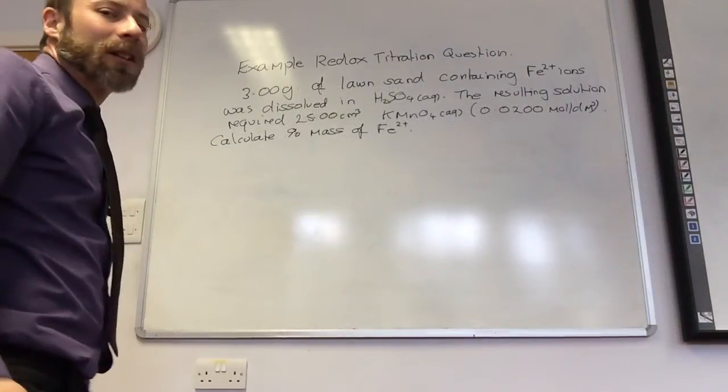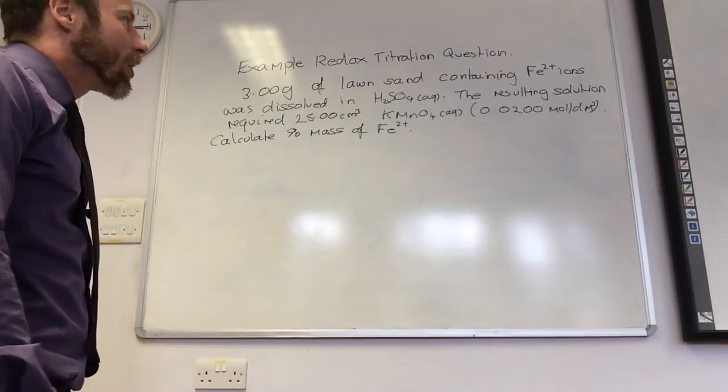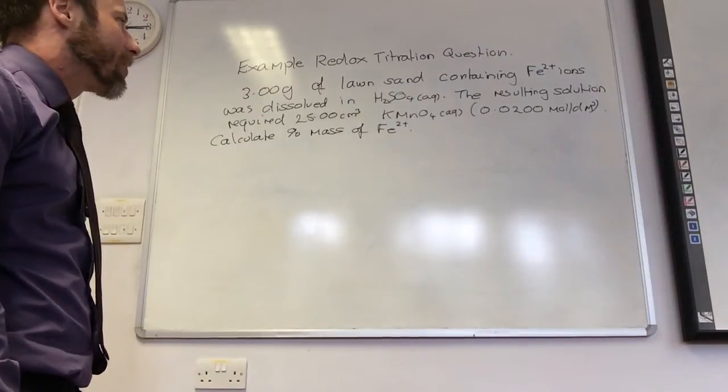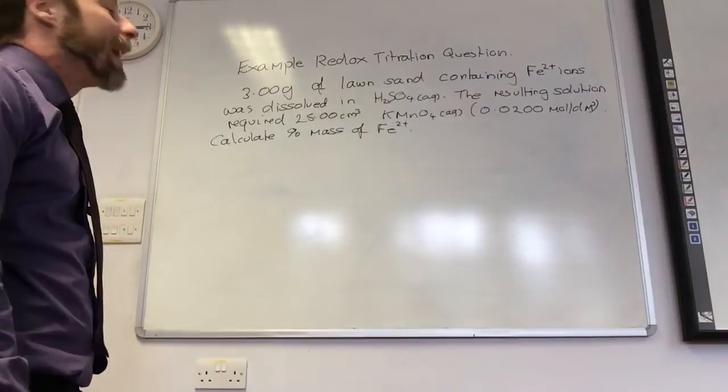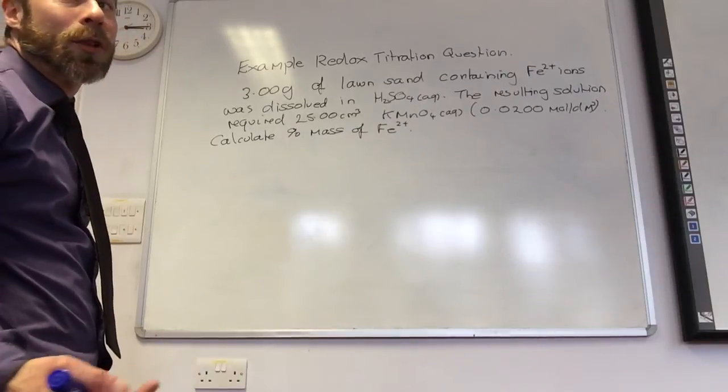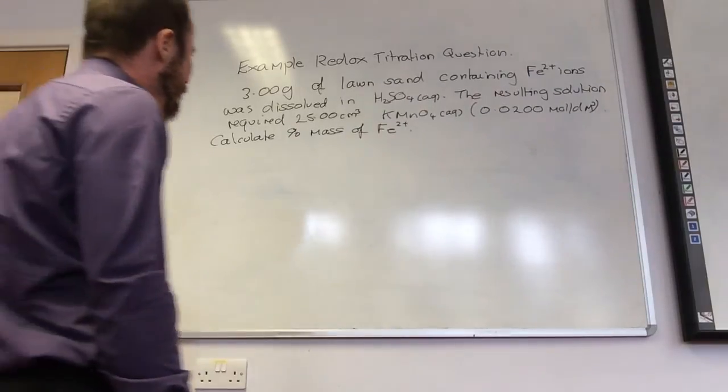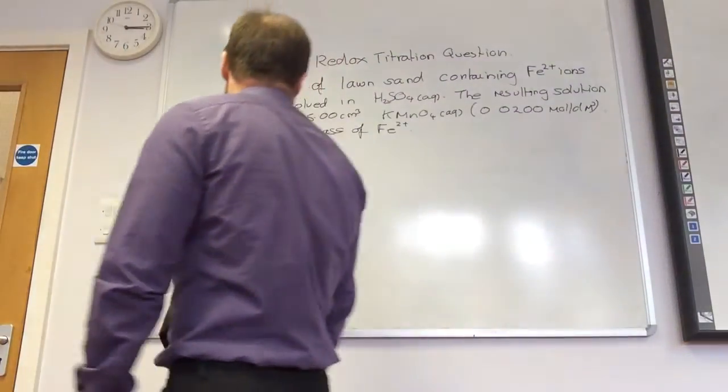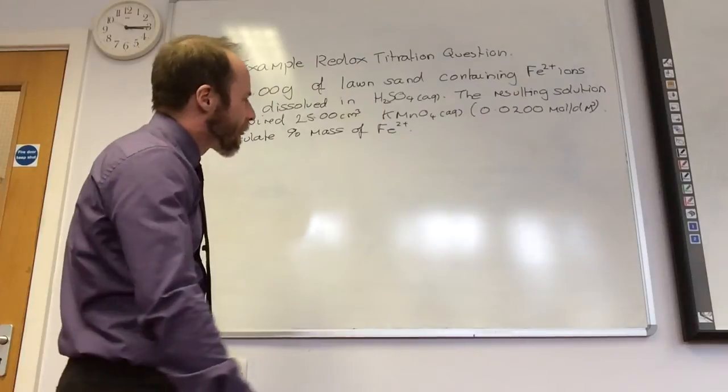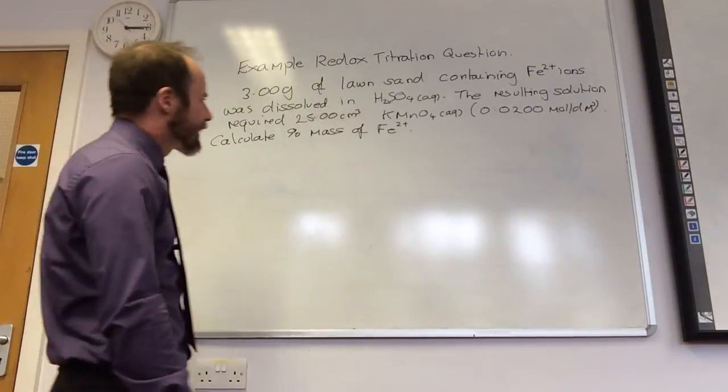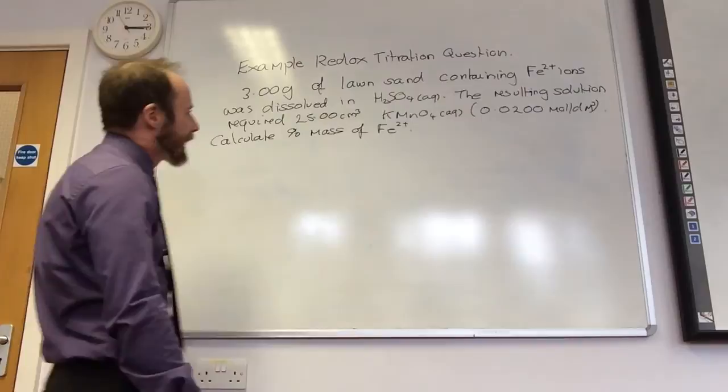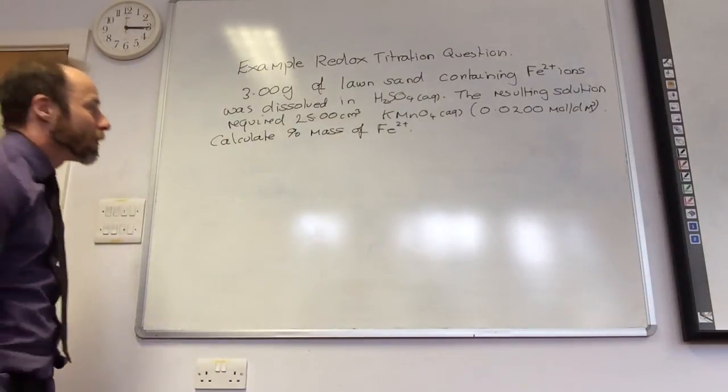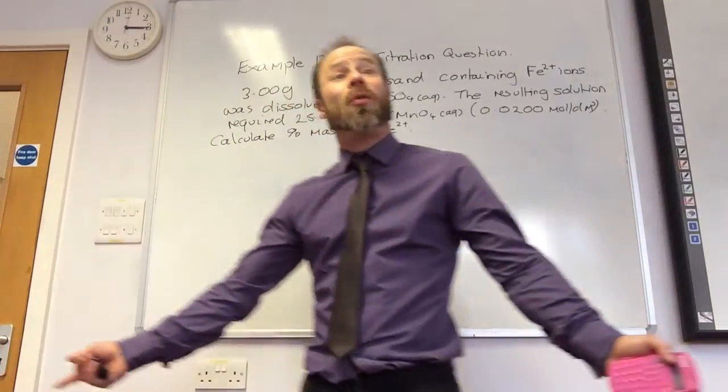So, this is another type of question you can expect to get. It's not going to be a straightforward titration calculation at A2. And it will never be... They're not going to talk you through it either. This is it. So, they've given me 3 grams of lawn sand contains Fe²⁺ ions. We dissolved it in sulfuric acid. The resulting solution required 25 cm³ of potassium manganate solution of our concentration, and I need to calculate the percentage mass of Fe²⁺.